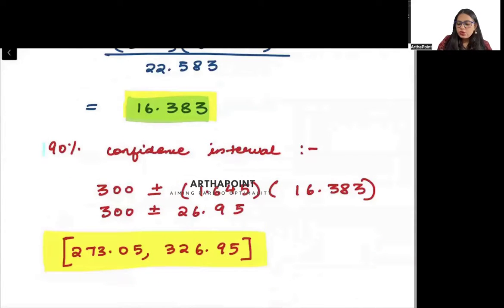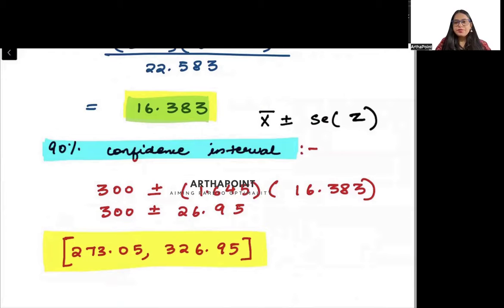Now I need to go ahead and find out 90% confidence interval. In order to find 90% confidence interval, I will do x-bar plus minus standard error times the value of z at 90%.